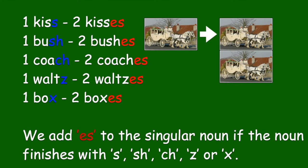One kiss, two kisses; one bush, two bushes; one coach, two coaches; one waltz, two waltzes; one box, two boxes. We add ES to the singular noun if the noun finishes with the letters S, SH, CH, Z, or X.